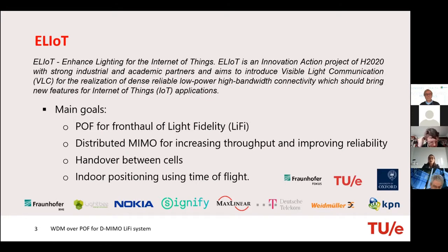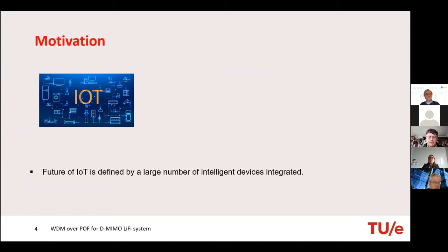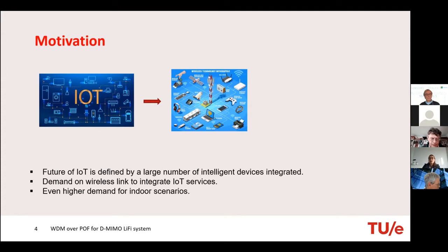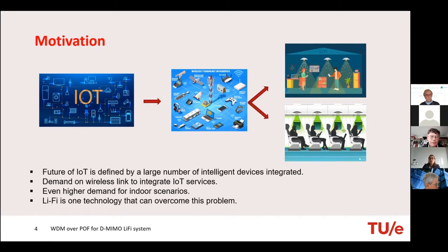We also want to apply handover between cells and our positioning using time of flight. For the motivation of this work, the future of IoT is defined by integrating large numbers of devices. These devices are usually interconnected using wireless links, but this can be a problem as the large increased number of devices will cause congestion in the electromagnetic spectrum. This demand is even higher for indoor scenarios where we spend most of our time. One technology that can overcome this problem is Li-Fi.